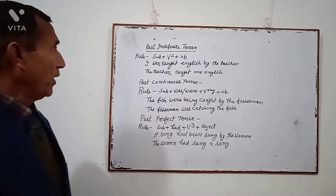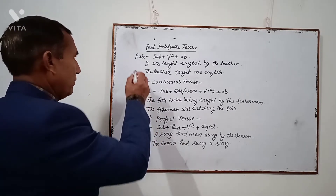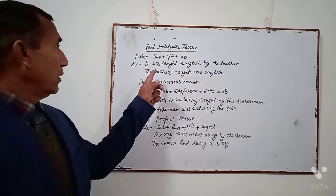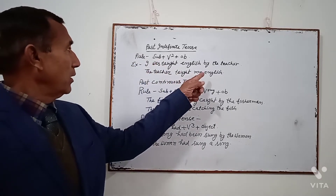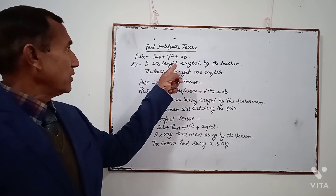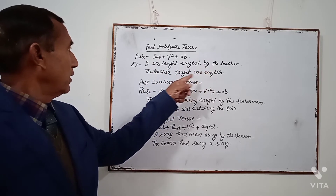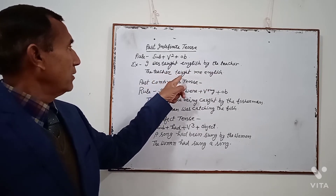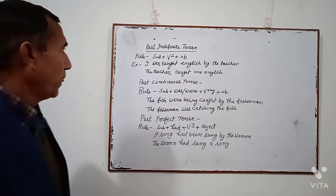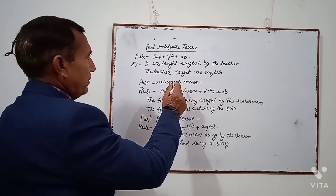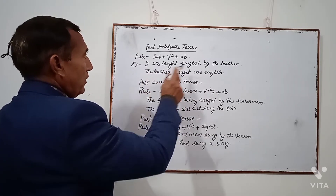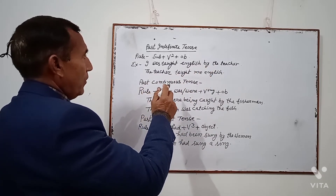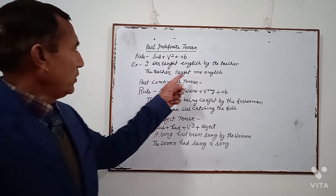Past Indefinite Tense. Rule: Subject + V2 + Object. Example: 'I was taught English by the teacher.' According to the rule, the teacher will be the subject, 'I' changes to object form 'me'. So: 'The teacher taught me English.'